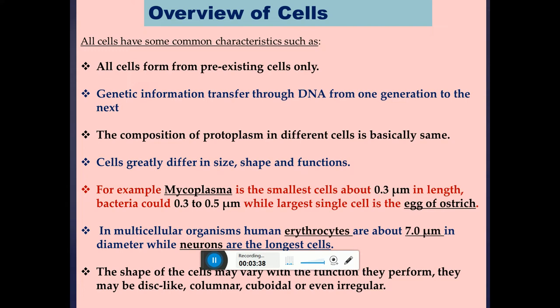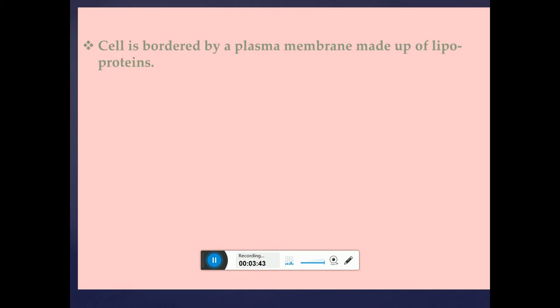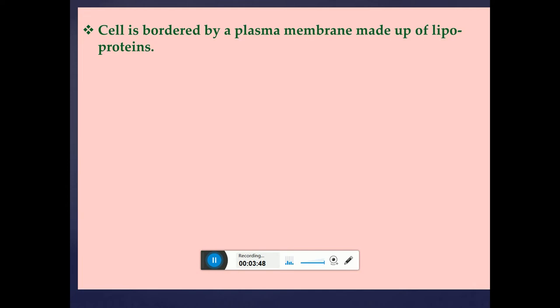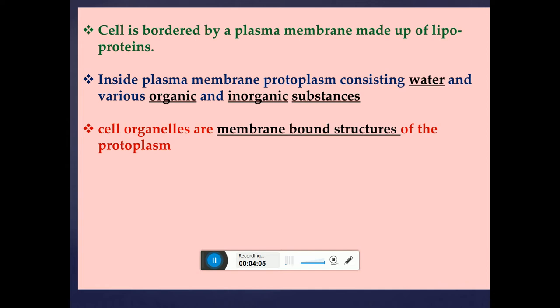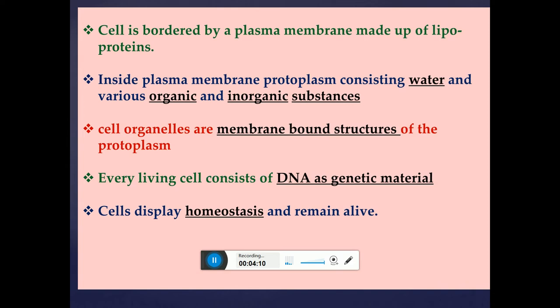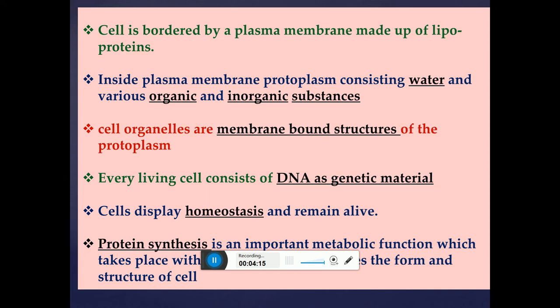The shape of a cell may vary according to the function it performs — cells may be disc-like, columnar, cuboidal, or even irregular. Cells are bordered by a plasma membrane made up of a double layer of lipoproteins. Inside the plasma membrane, protoplasm consists of water and various organic and inorganic substances. Cell organelles are membrane-bound structures of the protoplasm. Every living cell contains DNA as genetic material, displays homeostasis, and carries out protein synthesis within the cytoplasm using DNA and mRNA.